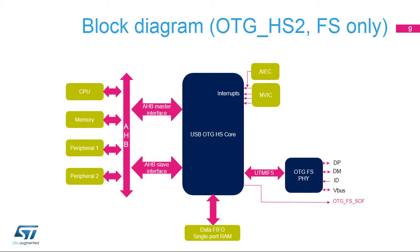In this block diagram, the USB-OTG high-speed controller core, HS2 instance, is shown in the center with its data FIFOs below. The FS-PHY on its right side handles the analog signal levels, including many specific level detections relating to on-the-go and battery charger detection functions. Note that the connectivity of the HS2 core only allows full-speed operation. The USB interrupt goes to the Cortex processor to signal various USB events. The AHB peripheral bus enables read-write access of the controller registers and the power and clock control block.